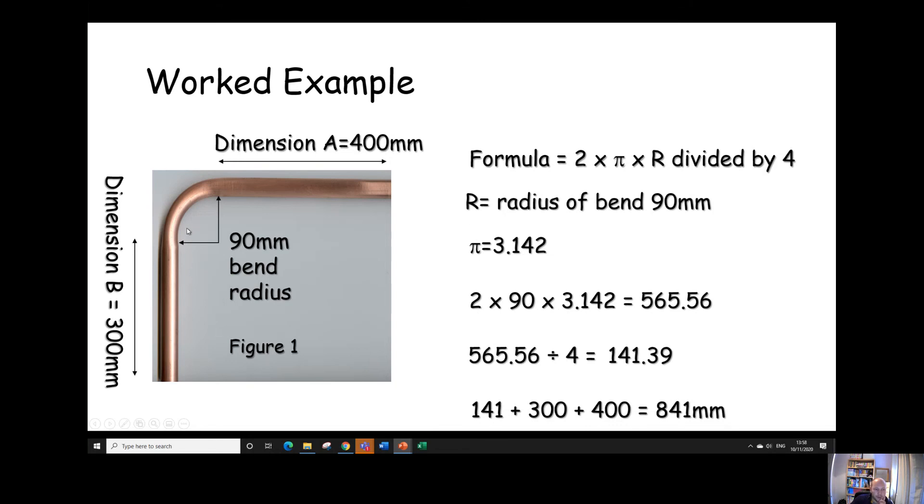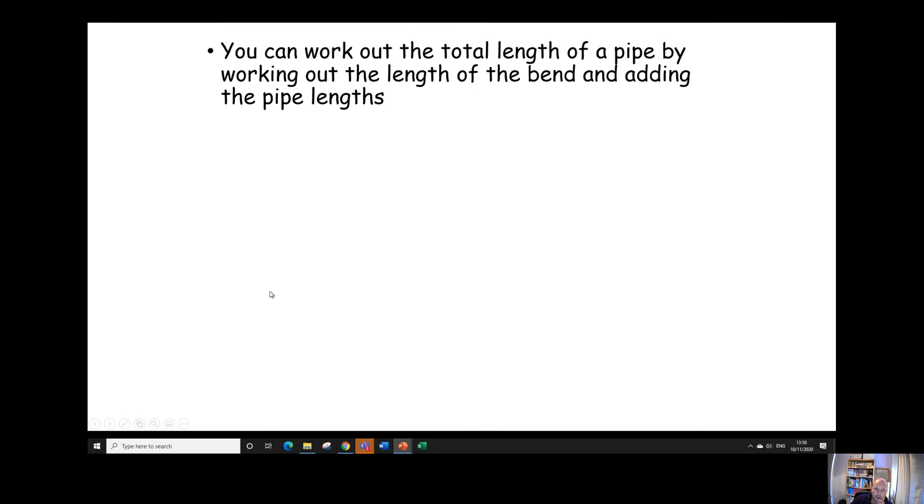So as long as we can work out that length of bend, the rest of it's moderately straightforward. You can work out the total length of pipe by working out the length of the bend and adding the pipe lengths. And again, you've got another example here. So 2, the radius of the bend is 30 mil, so 2 times 30 times pi divided by 4 gives us a total length of bend of 47.13 millimetres.